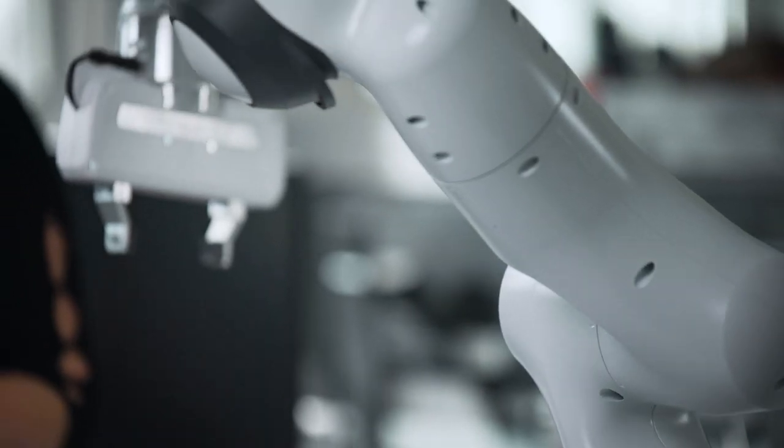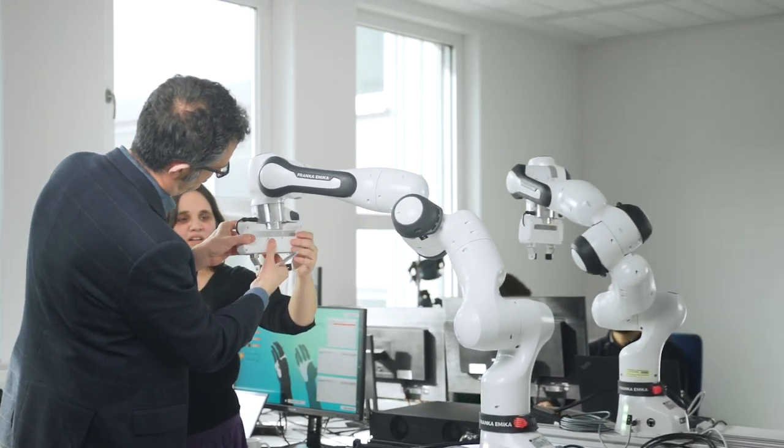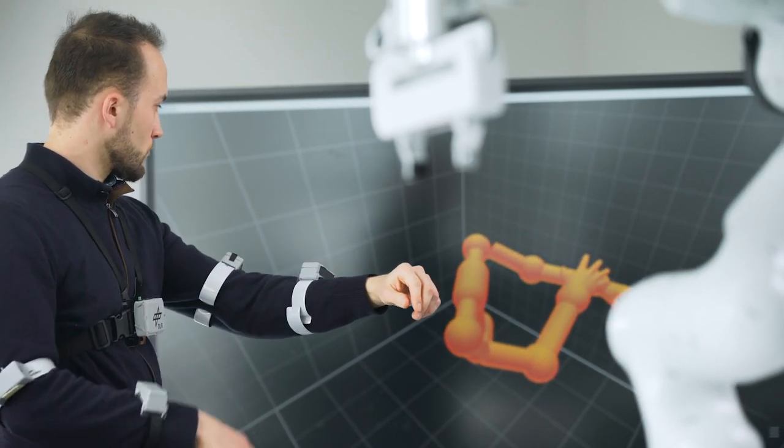Here at FAU we are in the area of rehabilitation and assistive robotics, so that means conceiving, building and testing devices which help people with musculoskeletal conditions regain their lost functions.